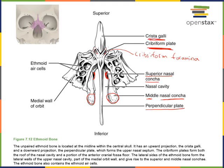We can also see there are air cells, or ethmoid air cells, also known as sinuses. These are paranasal sinuses in the ethmoid bone — paranasal sinuses that connect to the nasal cavity.